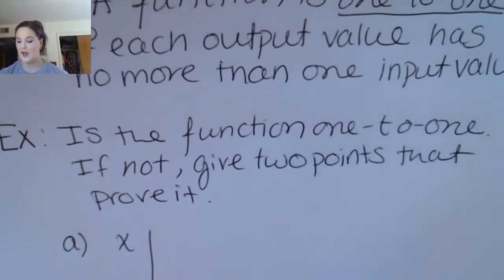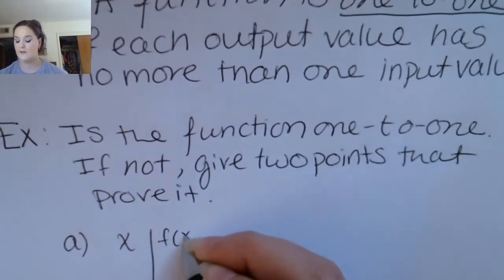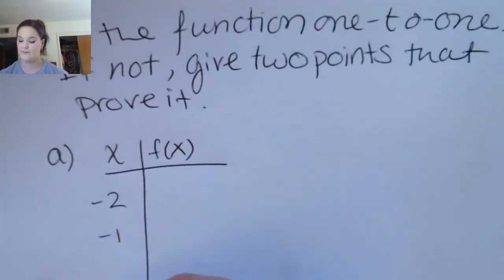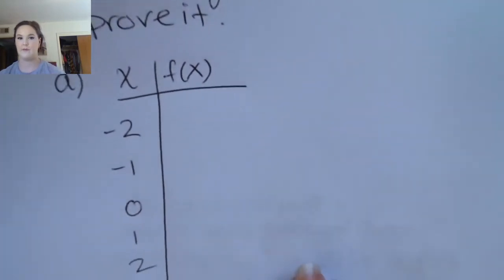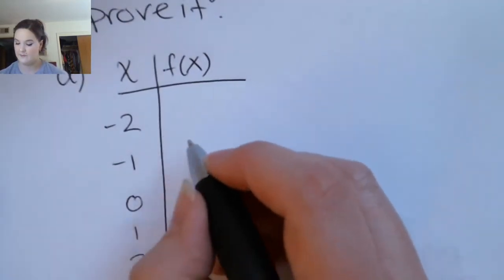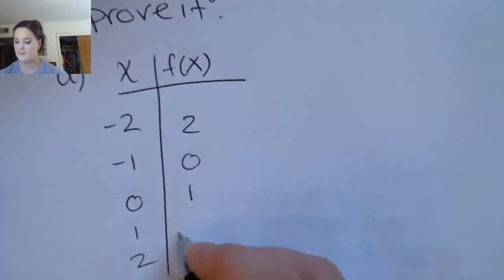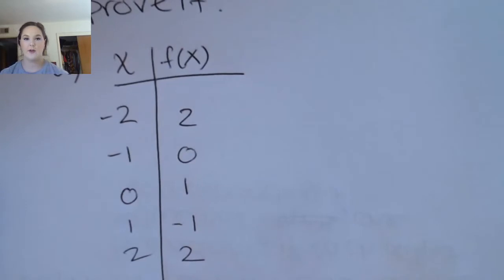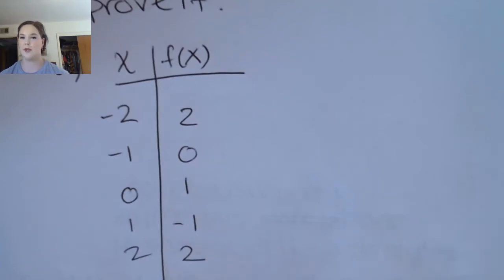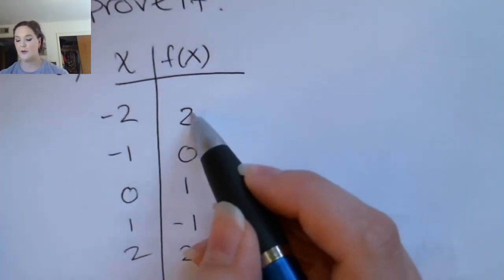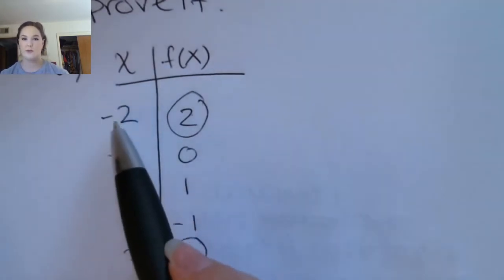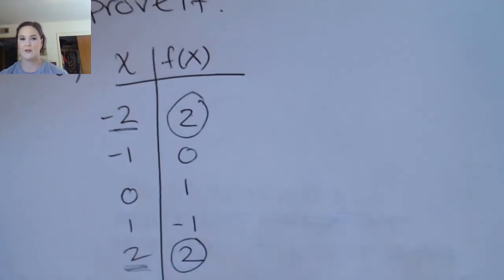First we're going to look at a function represented by a table of values. We're going to see if each input has one corresponding output or more than one corresponding output. You can see for the output two, you have two different corresponding input values: negative two and positive two.